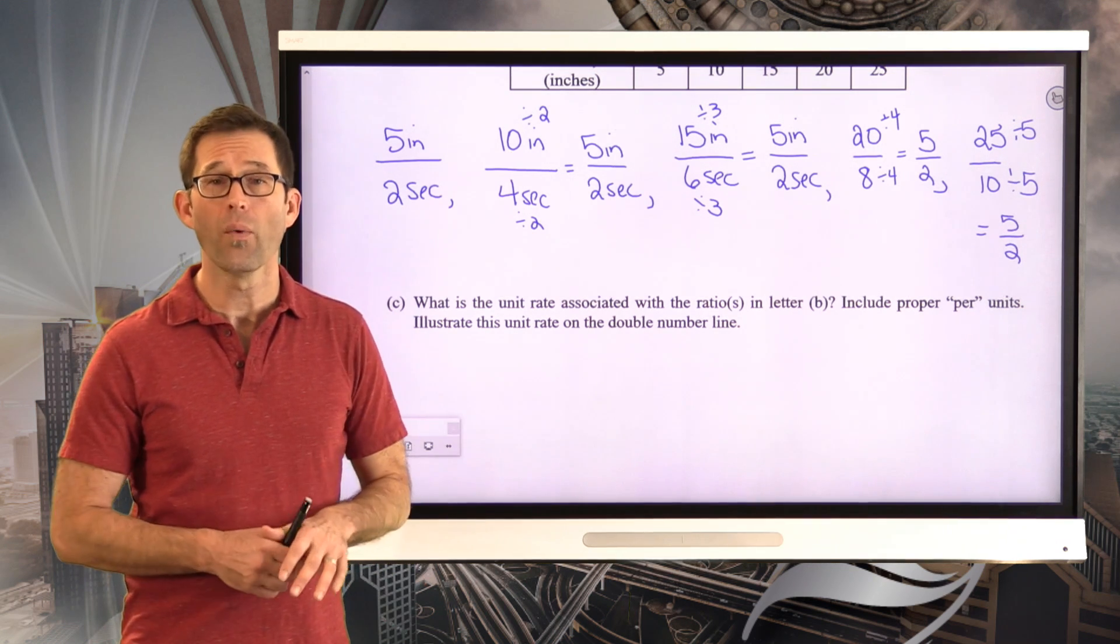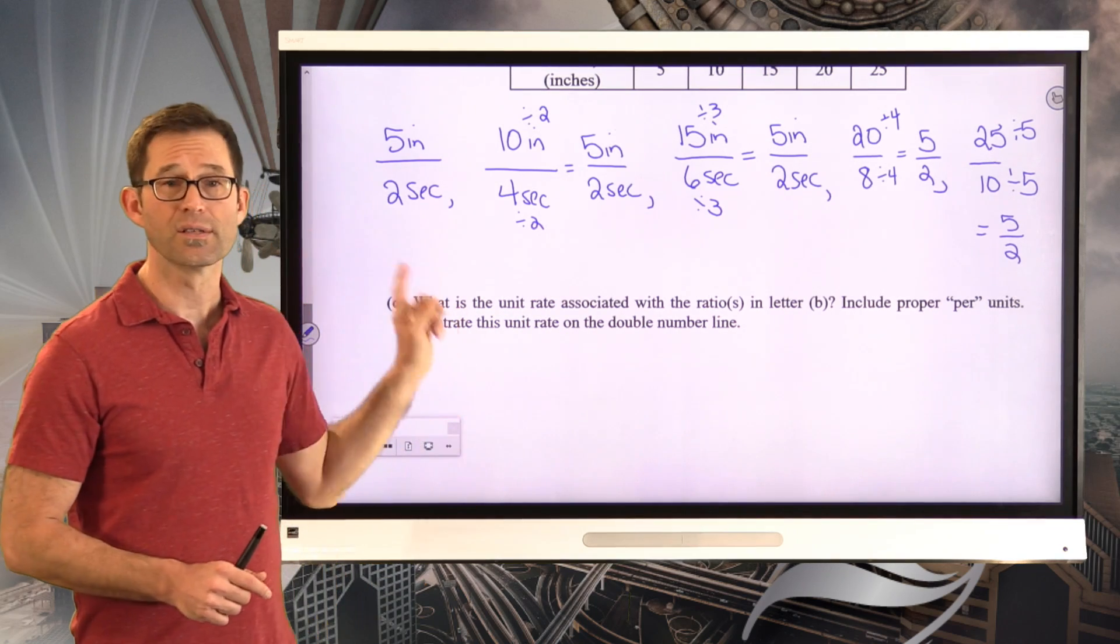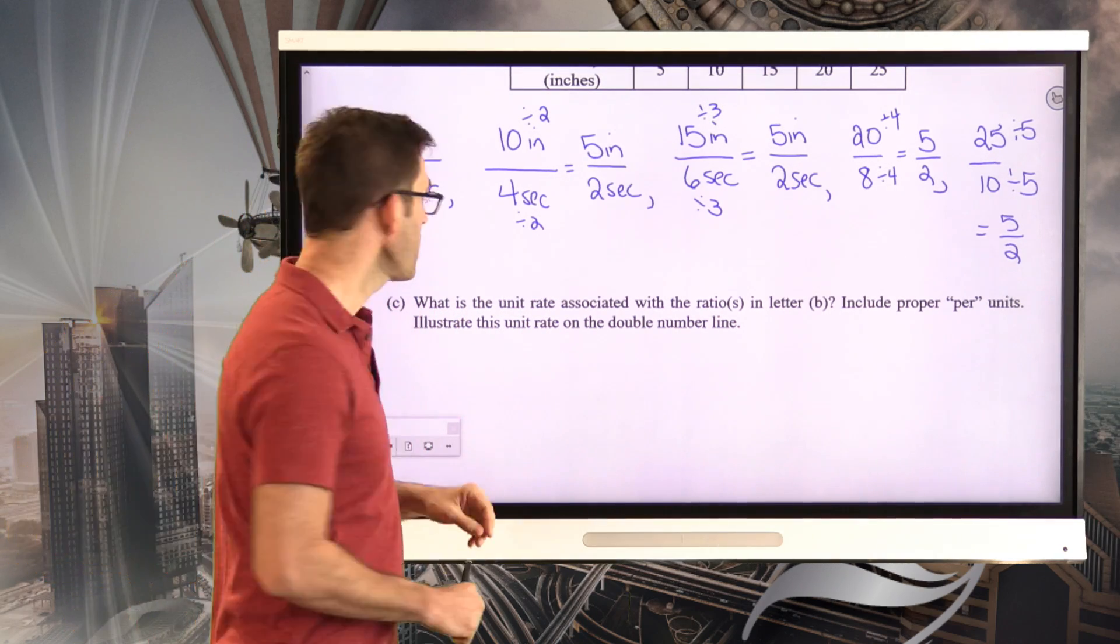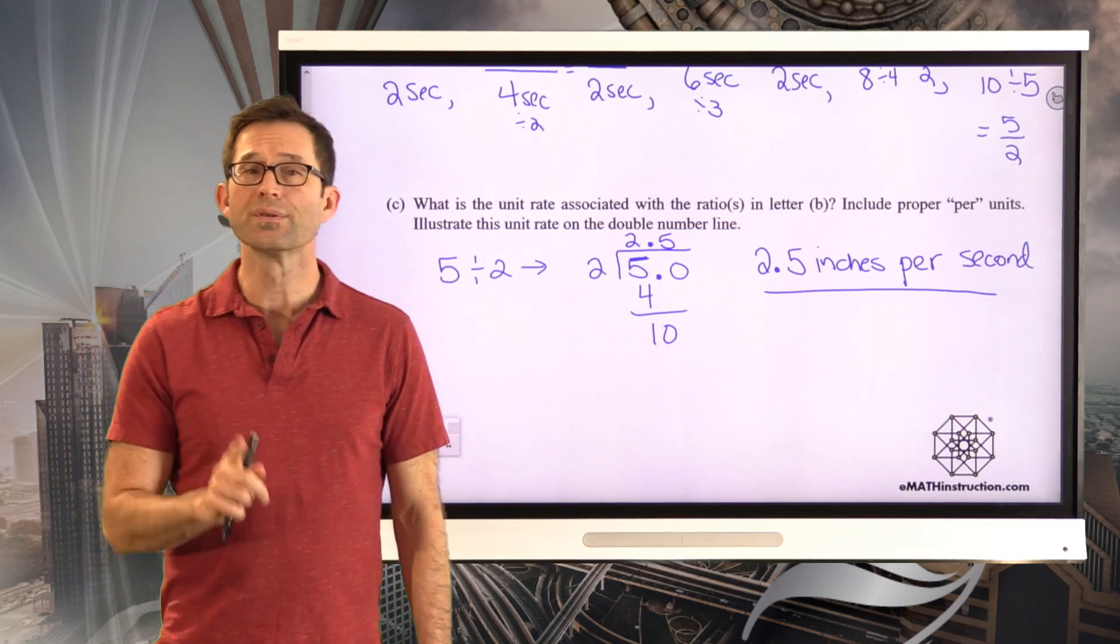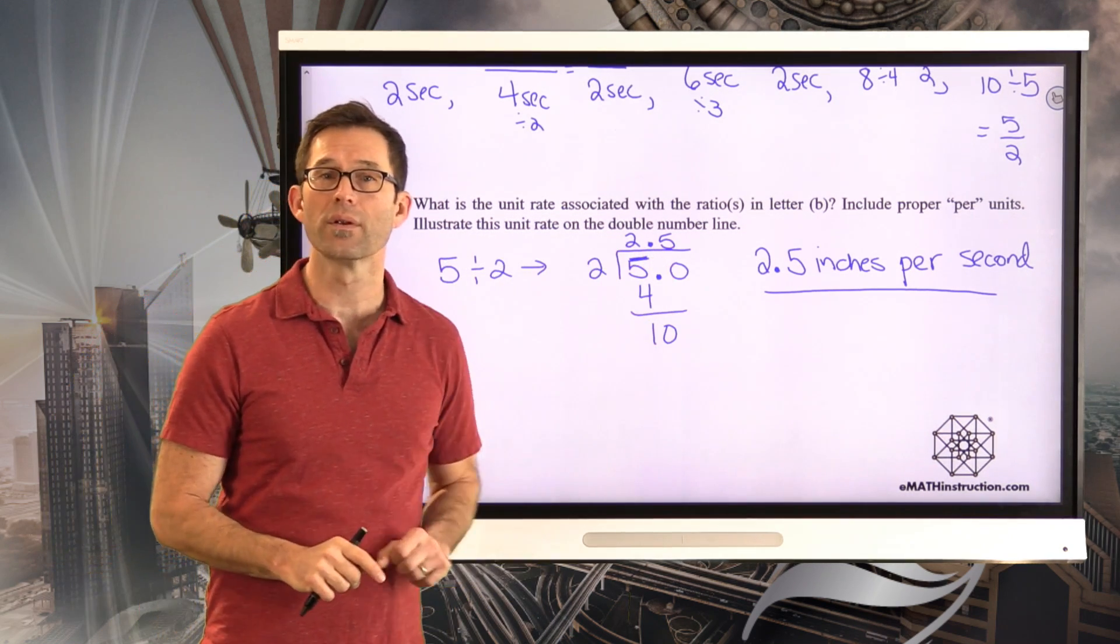So what I'd like you to do is change this ratio, five inches per two seconds, into a unit rate. The way we can always change any ratio into a unit rate is simply by dividing the numerator by the denominator. I think I'm going to do that actually using long division. In other words, I actually want to do five divided by two, which I can easily do using long division if I choose, or a variety of other methods. It gives us an entirely predictable answer, which is 2.5. And specifically, 2.5 inches per second.